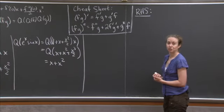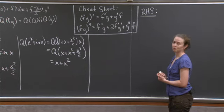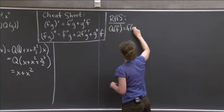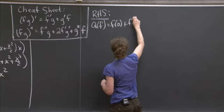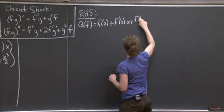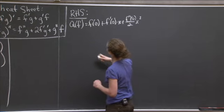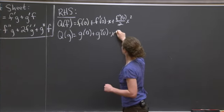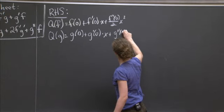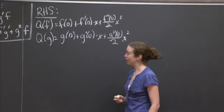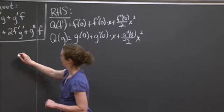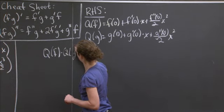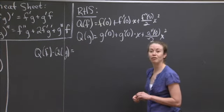Let's look at what the quadratic approximation of f is and what the quadratic approximation of g is, and then we'll take their final quadratic approximation. Q(f) equals f(0) plus f'(0) times x plus f''(0) over 2 times x squared. Q(g) equals g(0) plus g'(0) times x plus g''(0) over 2 times x squared. Now I'm going to multiply those two together, grouping carefully so that I have all the higher order terms at the end.